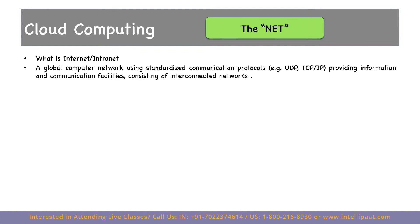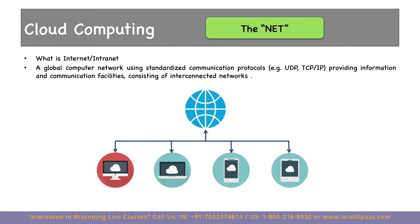The technical definition of internet is: a global computer network using standardized communication protocols — for example UDP, TCP/IP — providing information and communication facilities consisting of interconnected networks. We have a global network with thousands of routers provided by multiple internet service providers, and billions of devices each connected to each other using this global network.